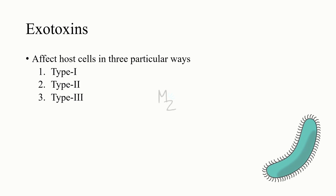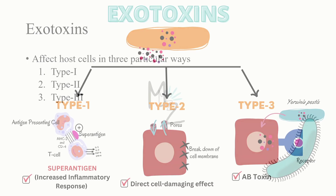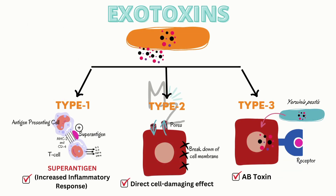Exotoxins affect host cells in three particular ways: type 1, type 2, and type 3 — this is the most straightforward way to categorize them. Looking at this diagram, this is the bacteria releasing exotoxins — making them inside and then releasing them. There are three types: type 1, type 2, and type 3.